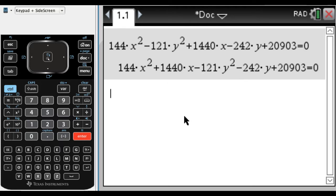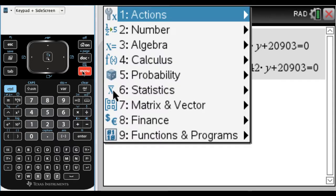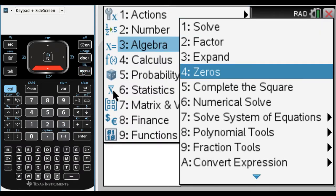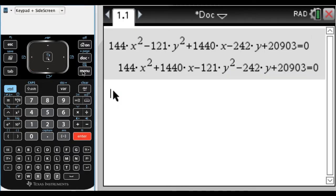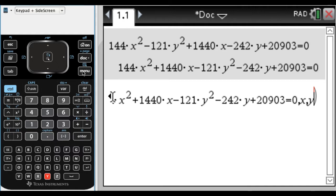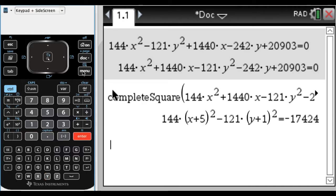The way we start is we complete the square. To do that, I'm going to do menu, option 3, and then option 5 is complete the square. I'm going to complete the square on this thing, comma x, comma y. And so it does this, which is almost what we want, but we want this to equal 1.